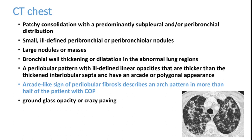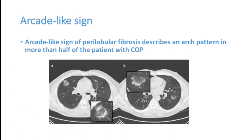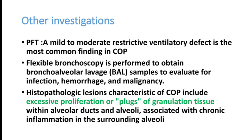Otherwise the CT scan may look like any other bilateral extensive pneumonia. The arcade-like sign, also called perilobular fibrosis, describes an arch of consolidation and is present in more than 50% of patients with cryptogenic organizing pneumonia, making it an important diagnostic clue on CT scan.